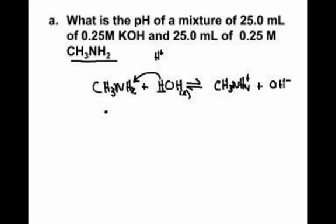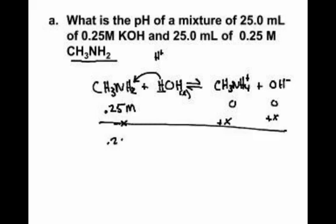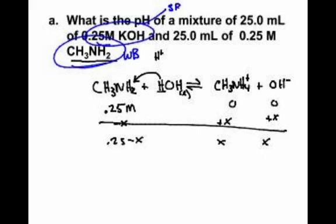We didn't read the problem very carefully, but we're going to talk ourselves through it. This is 0.25 molar, and we do minus X, plus X. Why are they doing this? 0.25 minus X. That is a mixture of a strong base and a weak base — this right here is a weak base, and this right here would be a strong base.